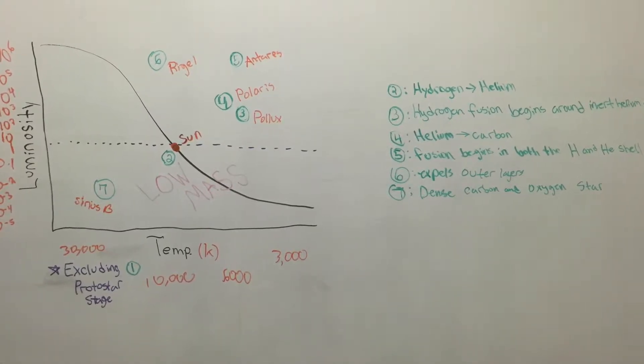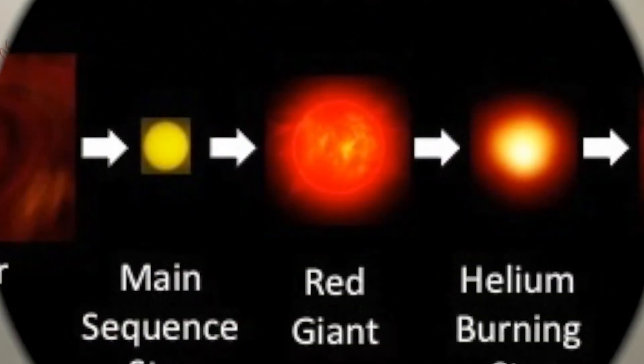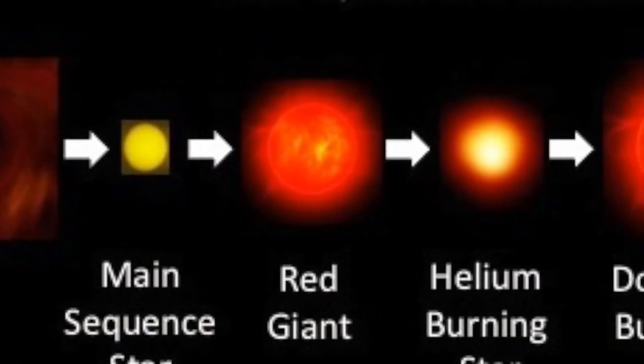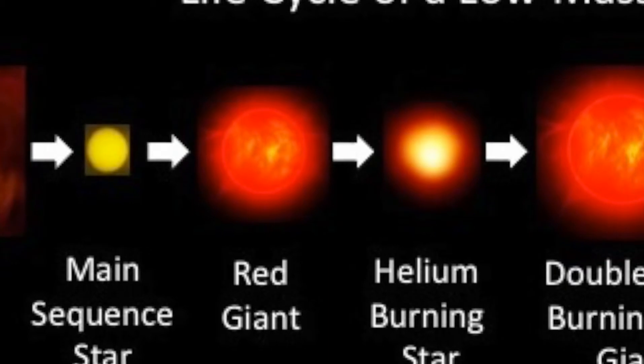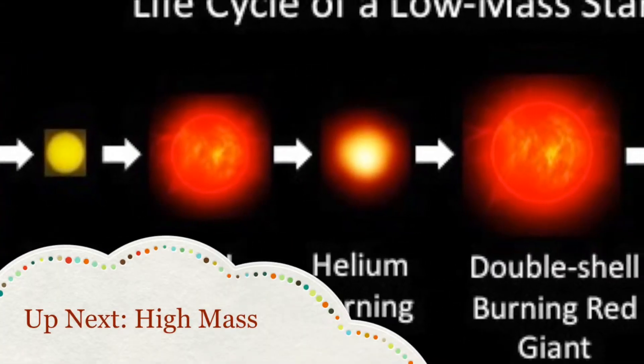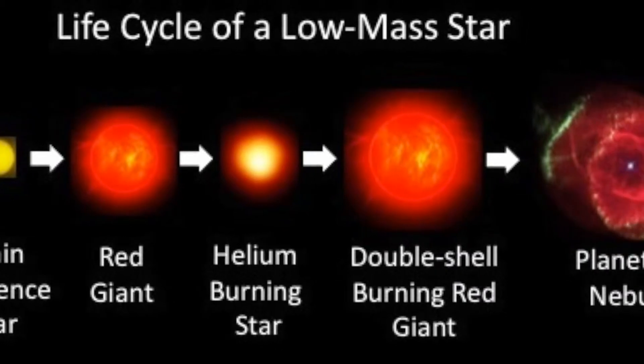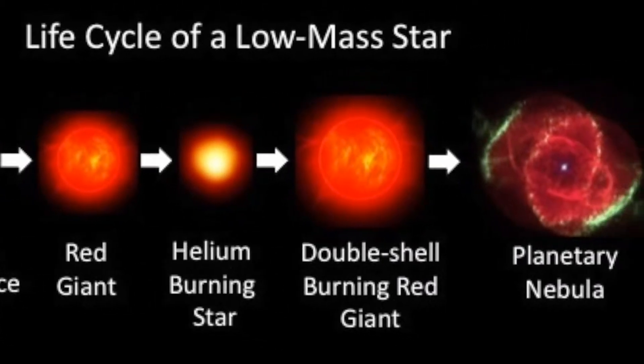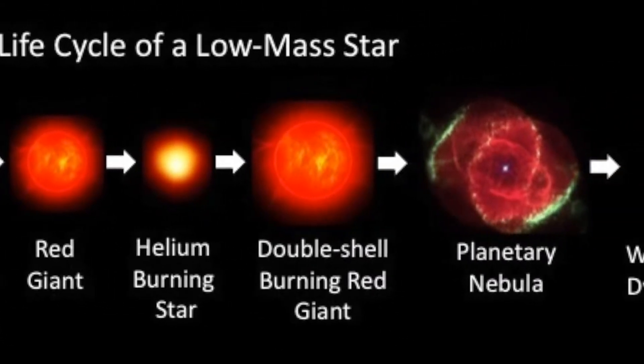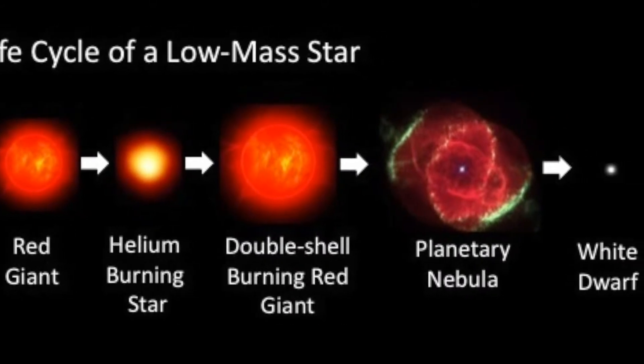From there, a planetary nebula is formed, in which the dying star expels its outer layers, leaving behind an exposed inert core. Lastly, a white dwarf is the remaining result, which is primarily composed of carbon and oxygen, because the core of the low mass star never grows hot enough to produce heavier elements.